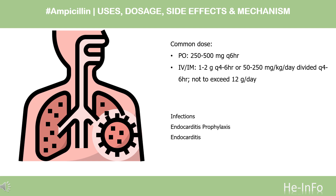Urinary tract infection (ampicillin-susceptible enterococcus, off-label): 1–2 g Q4–6HR with or without an aminoglycoside. Gonorrhea: 3.5 g administered once simultaneously with 1 g of probenecid. Respiratory tract infections (≥40 kg): 250 mg PO Q6HR, or 250–500 mg IV/IM Q6HR. Less than 40 kg: 25–50 mg/kg/day IV or IM divided Q6–8HR.